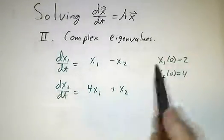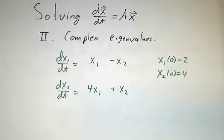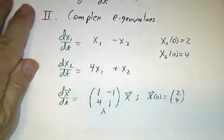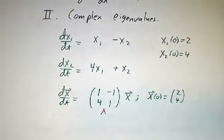So here's the system. Derivative, and we're taking initial values 2, 4. If you write it in matrix form, we're saying derivative of x is 1, -1, 4, 1 times x, and the initial value of x is 2, 4. And we call the matrix A.